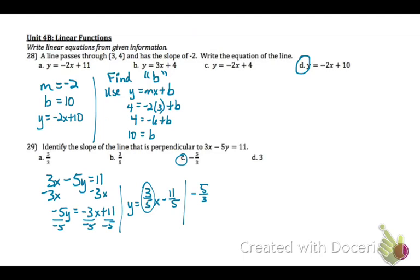On number 28, we want to write a line. First of all, a line passes through the point 3, 4. So 3 is our x and 4 is our y coordinates, and has the slope of negative 2. Write an equation of the line. So the two things we need to know are the slope, which we already know, so you can write m equals negative 2. We need to find the b value. So you're going to use y equals mx plus b. You're going to plug in 4 for y, negative 2 for m, and 3 for x, and then solve for b to find that b is 10. Now you can write your equation of your line just plugging in the negative 2 and 10 for m and b. And so the correct answer is d, y equals negative 2x plus 10.